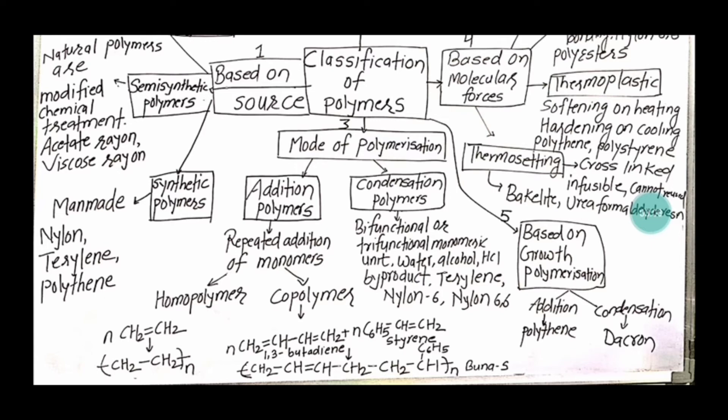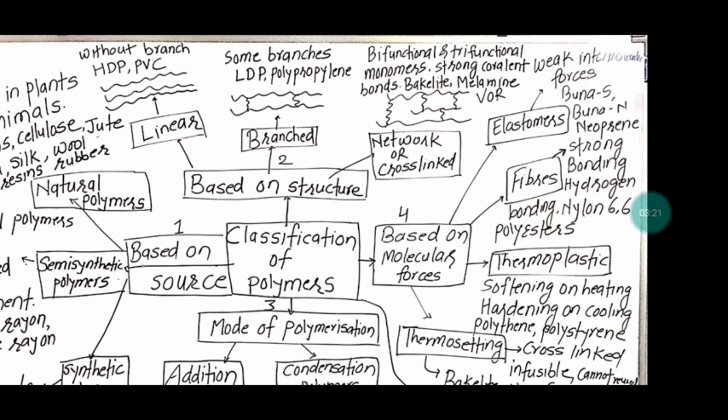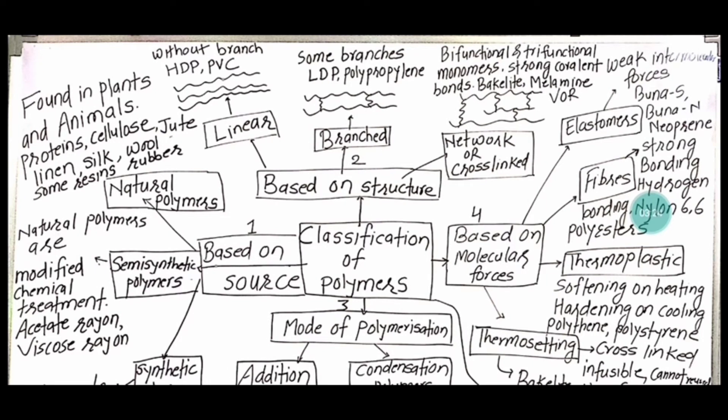Then let us talk about classification based on molecular forces. Here we have elastomers. Elastomers have weak intermolecular forces, example is Buna-S, Buna-N, or neoprene. Fibers, as compared to elastomers, they have strong bonding, basically hydrogen bonding. Example is nylon 6,6 and polyester.